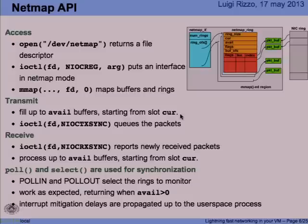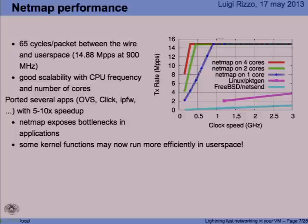These slides show the basic protocol to access a NIC using NetMap. You open a special file, get a file descriptor, issue an IOCTL to bind the file descriptor to a given interface or something else, map the memory region, and you're ready to send and receive packets and use select or poll for synchronization.